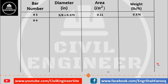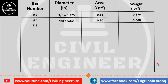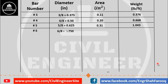The next bar commonly used for construction is the number four bar. Its diameter is 4/8 or 0.5 inches, the cross-sectional area is 0.220 square inches, and its weight is 0.668 pounds per foot. The next bar is number five: diameter is 5/8 or 0.625 inches, cross-sectional area is 0.31 square inches, and weight is 1.043 pounds per foot. The next bar is number six: diameter is 6/8 or 0.75 inches, cross-sectional area is 0.44 square inches, and weight is 1.502 pounds per foot.